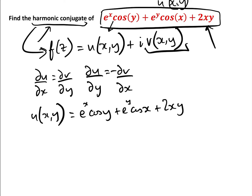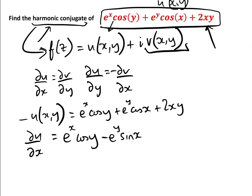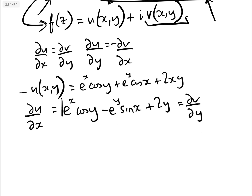This is very similar to the methods used in previous videos. We take the partial derivative of u with respect to x, which equals e to the x cos y minus e to the y sin x plus 2y. That is du/dx, and we know that equals the partial derivative of v with respect to y.